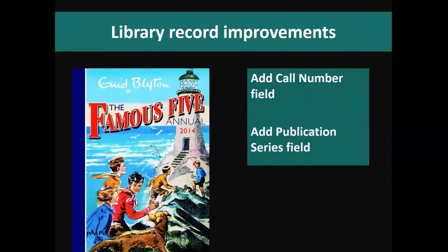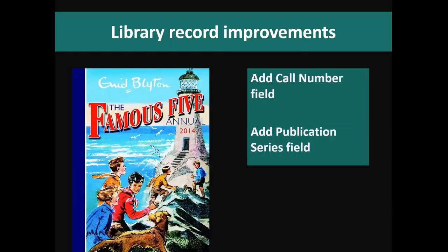We also ran a workshop for library records catalogued within Vernon to see what areas needed attention. Out of that we've identified two new fields to add to the object file: separating out call number, which is currently managed just as an other ID field, and adding in a publication series and notes table so that you can mark that a particular book is part of a larger overarching publication series.